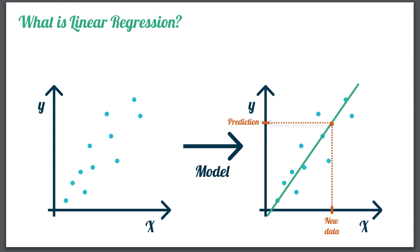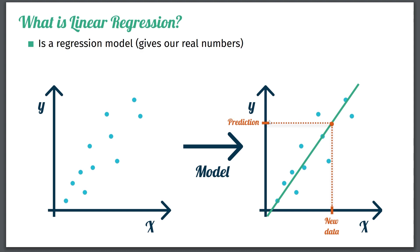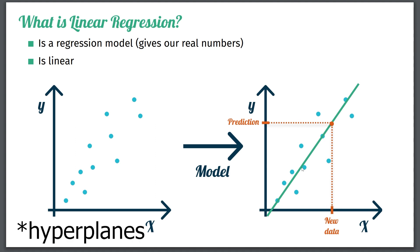The first thing to note about this model is that it is a so-called regression model — the predictions can be any real number on the y-axis. The next thing is that it is linear, as the name suggests. This essentially means that we are trying to approximate things with lines, or when we have several features, with a plane or other kinds of hyperplanes.